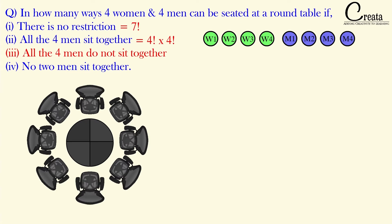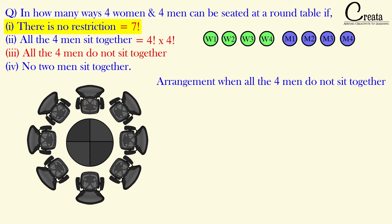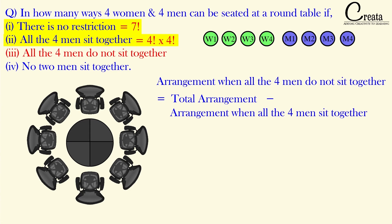Let's go to the third part: when all 4 men do not sit together. In the first part, the total number of arrangements with no restriction is 7 factorial. In the second part, when all 4 men are together, there are 4 factorial into 4 factorial arrangements. So the cases when all men do not sit together equals total cases minus the cases when they are together: 7 factorial minus 4 factorial into 4 factorial.